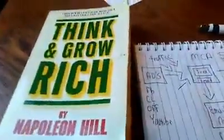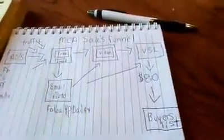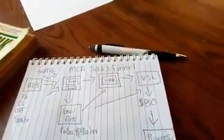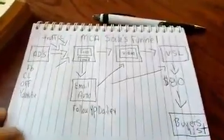Hey guys, how are you doing today? It's Alex and today I'm coming at you with another free MCA training video on how to make more money with MCA. I'm at the local Starbucks by my house. I'm going to give you guys how to set up your MCA marketing funnel in less than 5 minutes. I'm reading Think and Grow Rich and I'm going to show you guys the MCA marketing funnel I use to make over $1,000 a week with MCA and a simple marketing funnel.